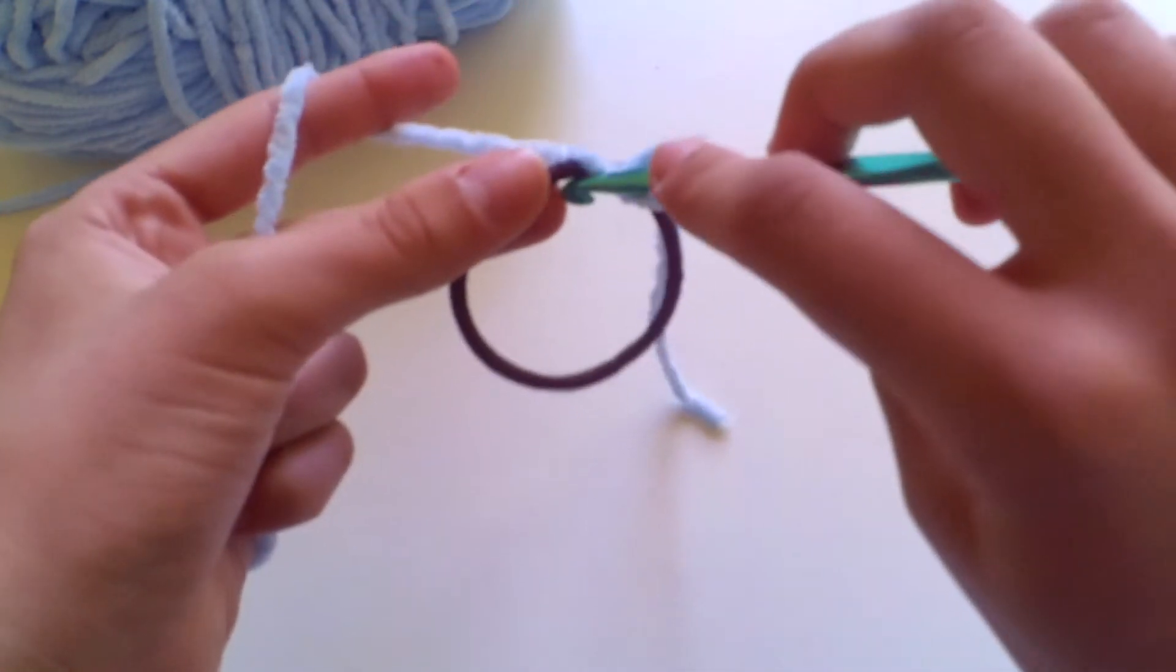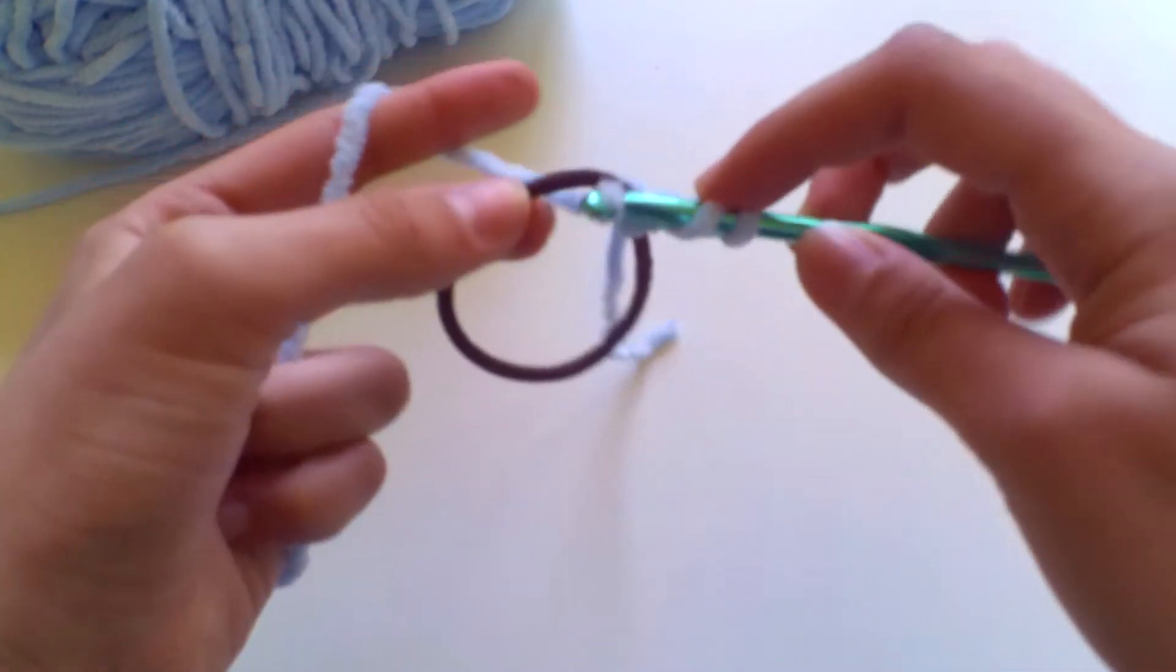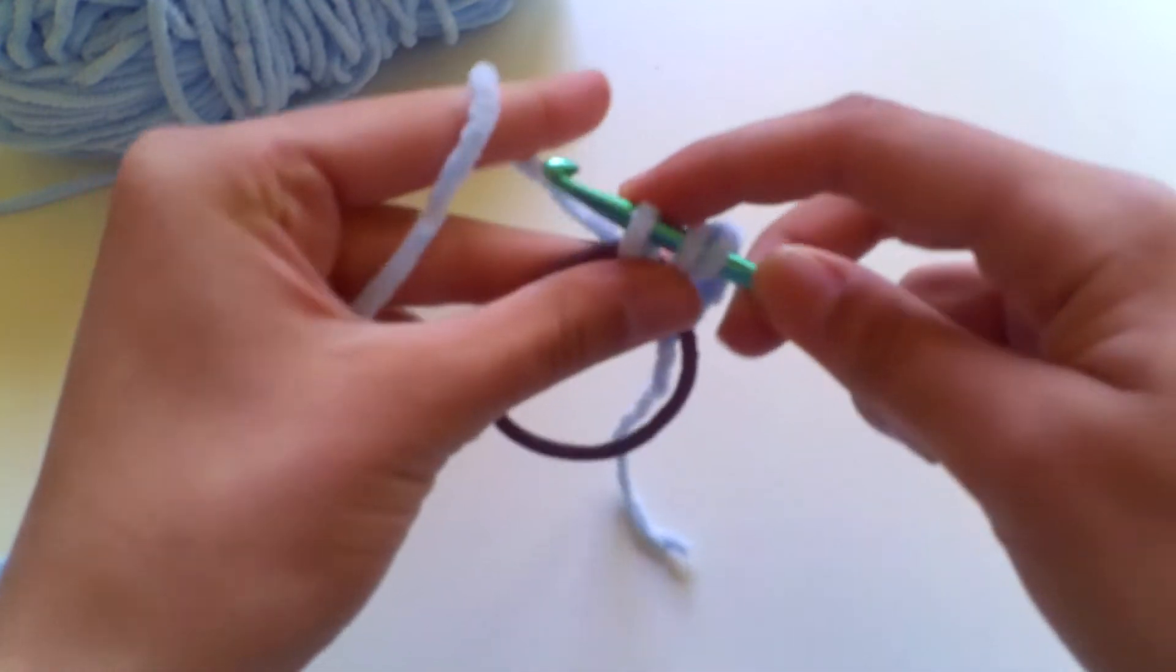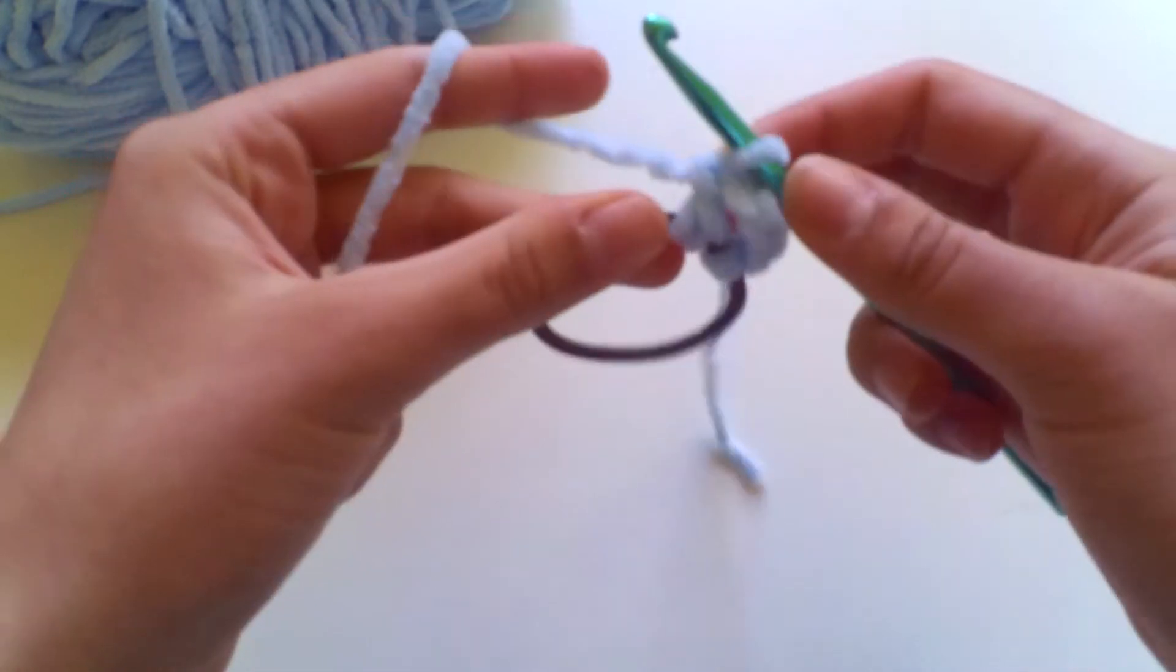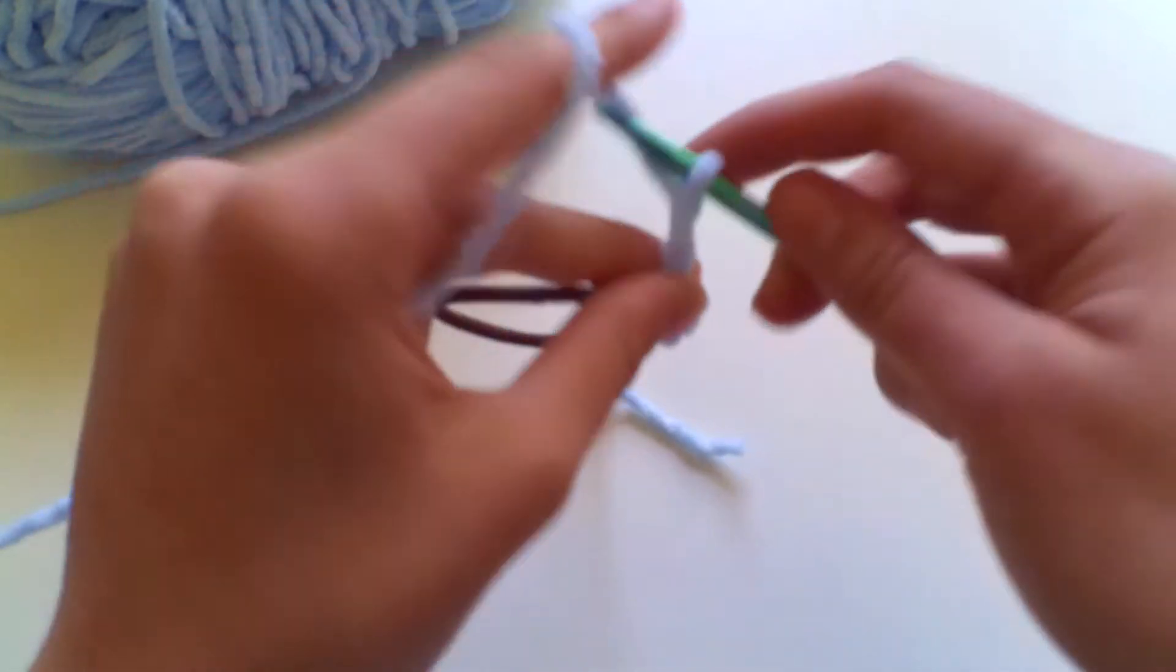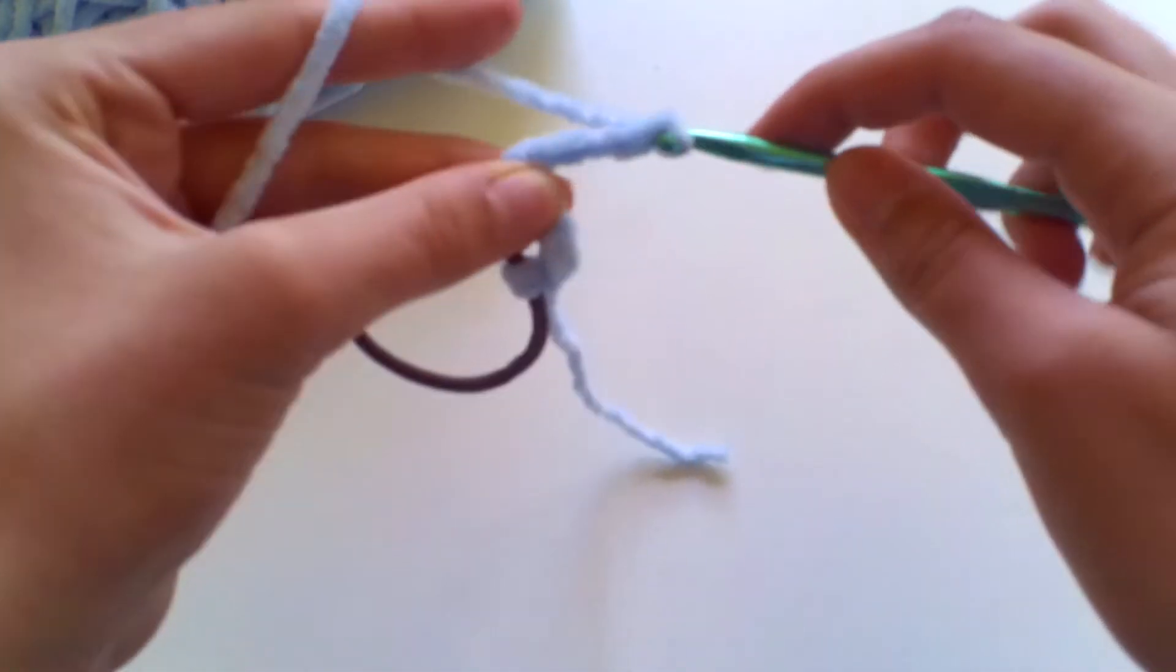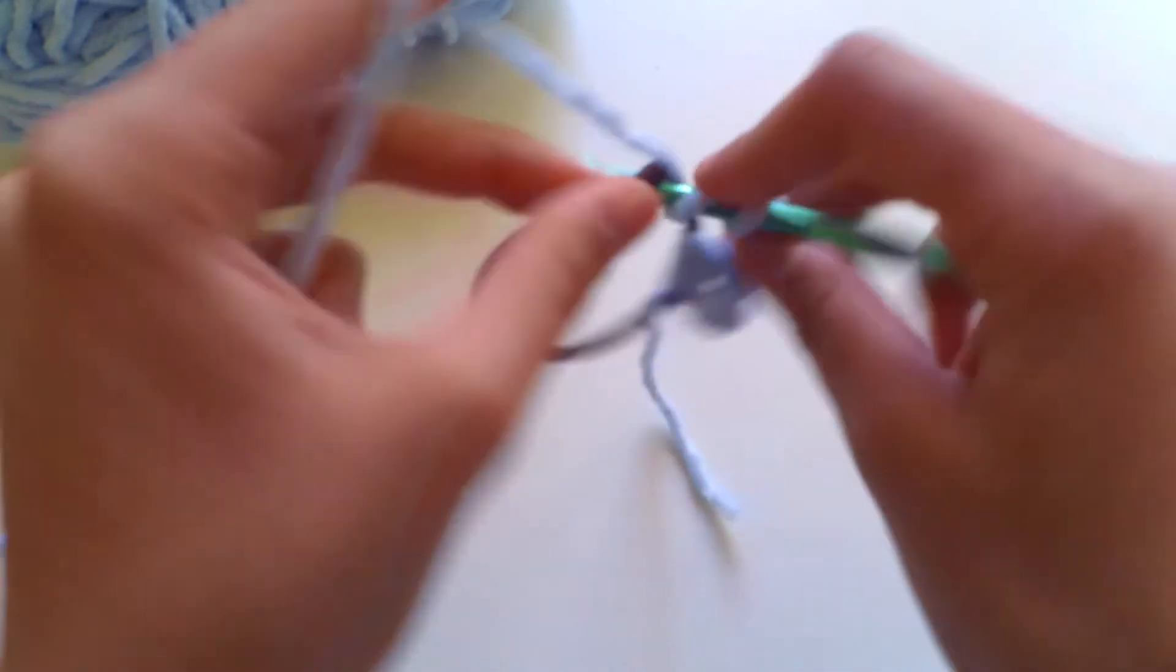So yarn over into your bobble, yarn over and pull up a loop, yarn over and pull through two loops, yarn over and pull through two loops and then you can chain three, one, two, three and work another treble crochet.